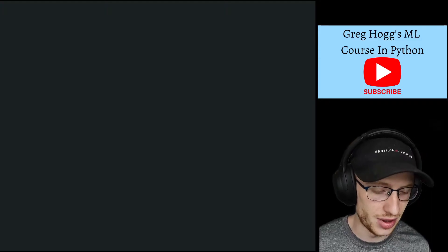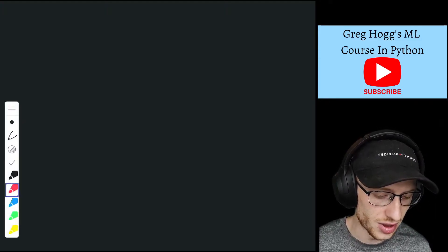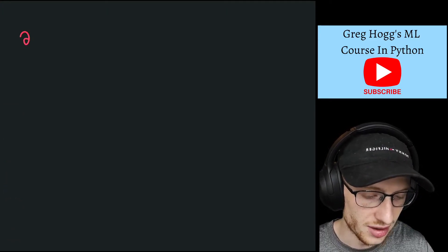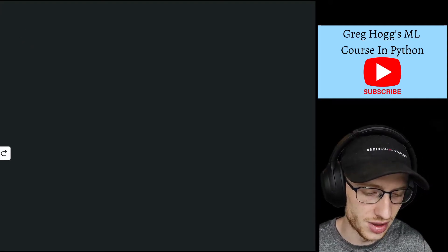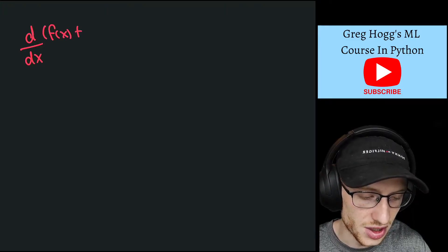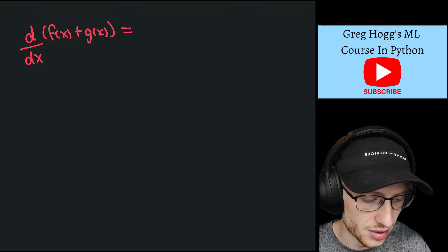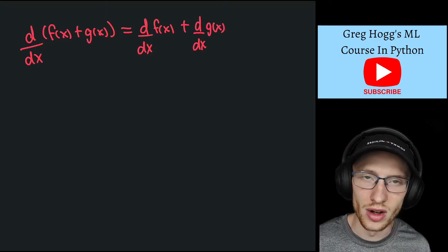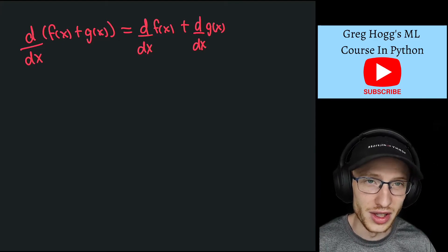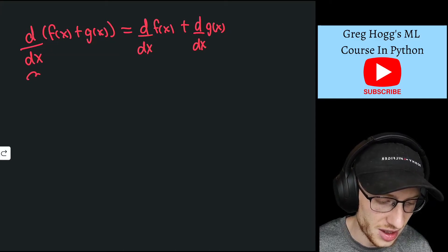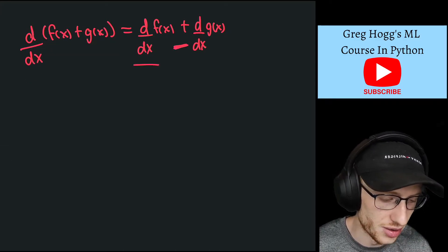I'm going to start with an apology because I missed a derivative rule which is extremely important. This works for partial derivatives or normal derivatives — it doesn't matter. d/dx of f(x) + g(x) is equal to d/dx of f(x) plus d/dx of g(x). So all I'm saying is that the derivative of a sum is the sum of the derivatives.